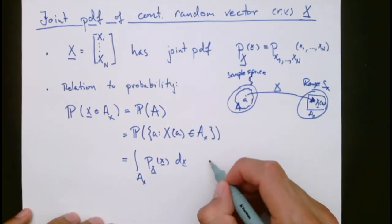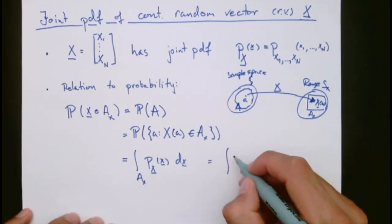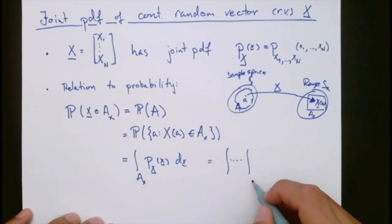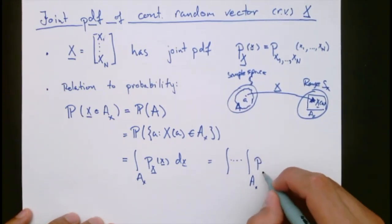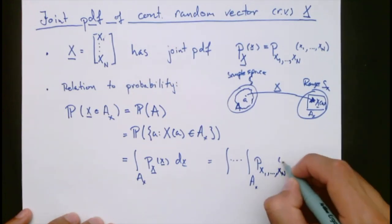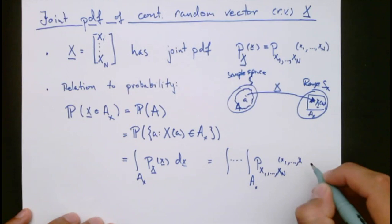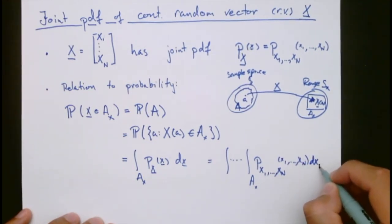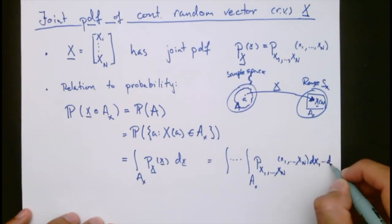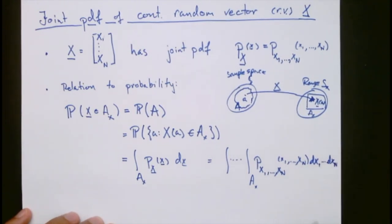If you wish, you can also write this up as a multiple integral here. So still the same set of this other function here, x1 up to xn, and then the dummy variables x1 up to xn, dx1 up to dxn.